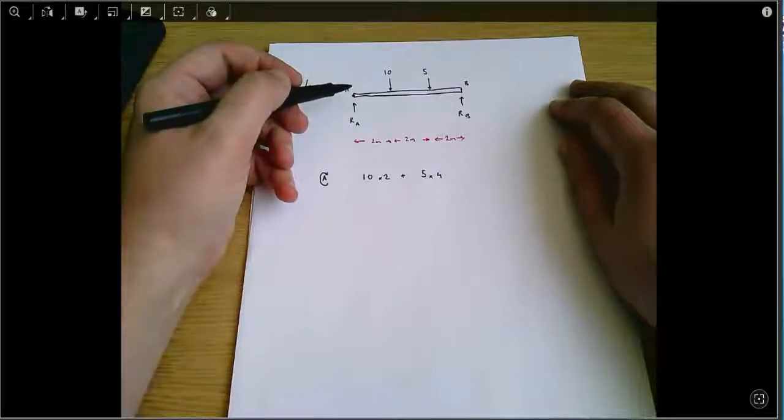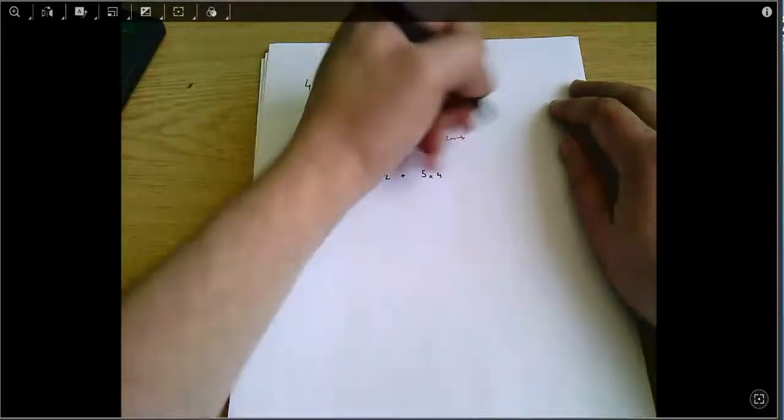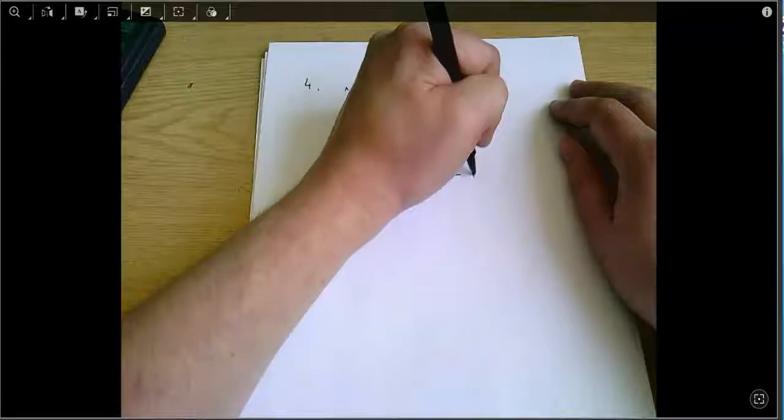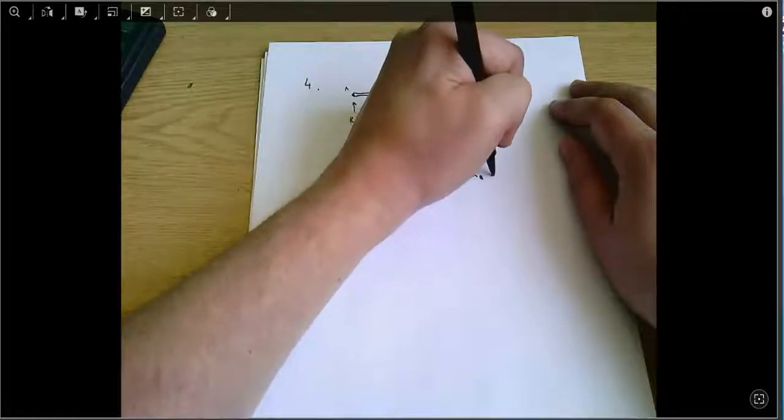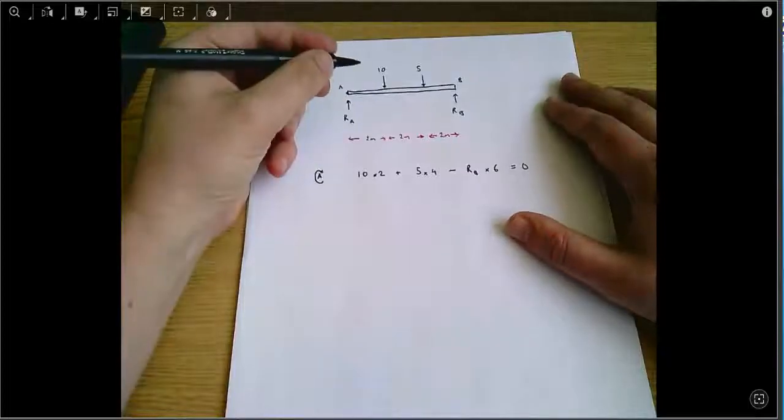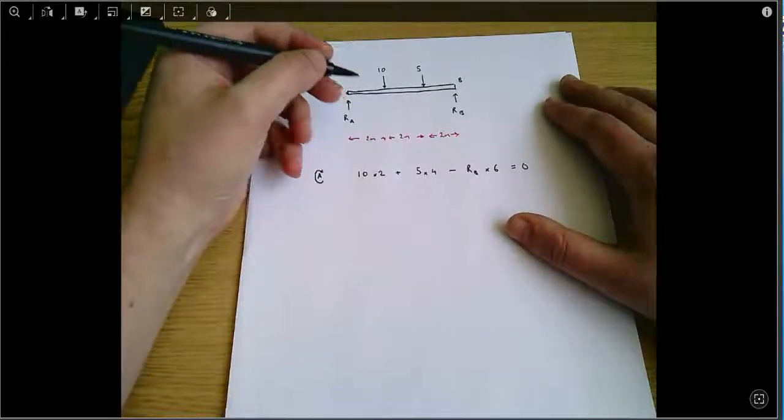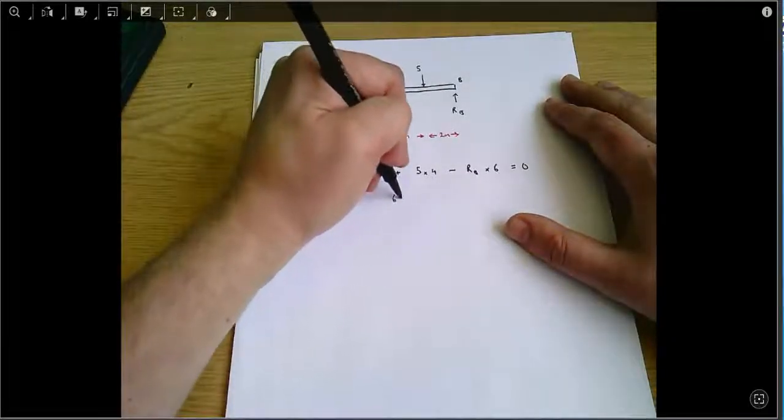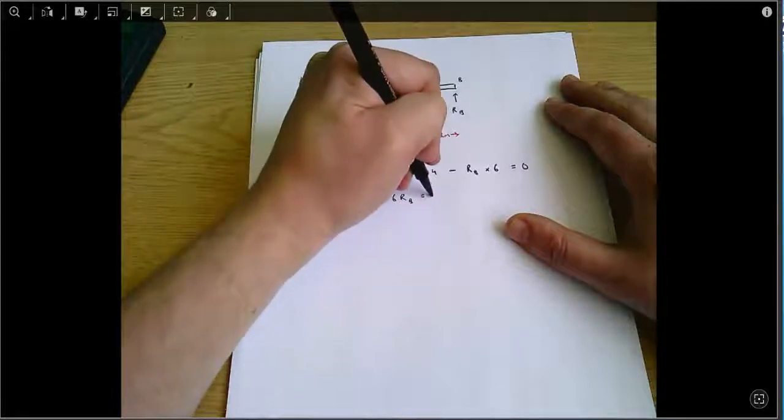And so RB is negative, and it's 6 metres away from the pivot. All of those things have to add up to zero, and when I rearrange that, I get that 6RB equals 40.